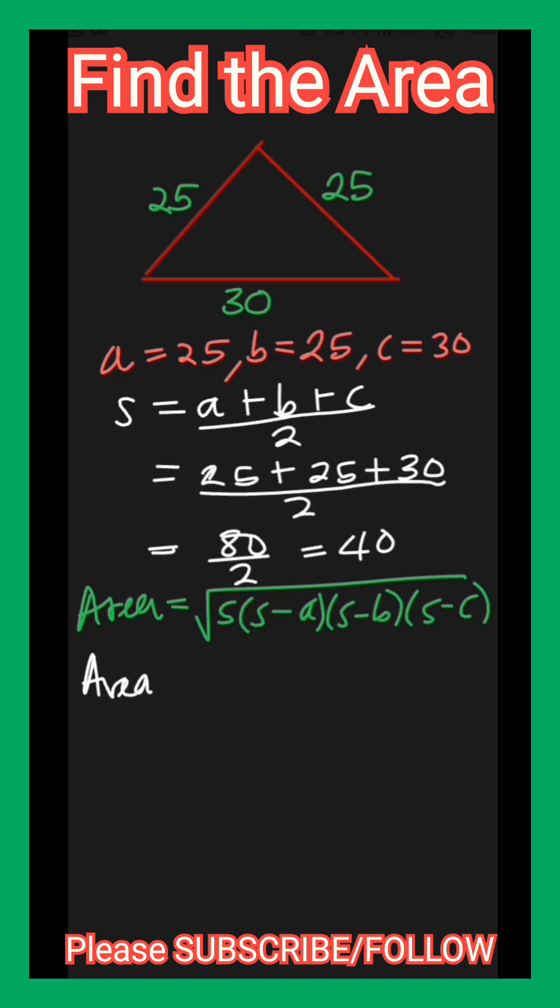And for this triangle, the area is S, which is 40, times 40 minus 25, the first side, times 40 minus 25, the second side, times 40 minus 30, the third side.